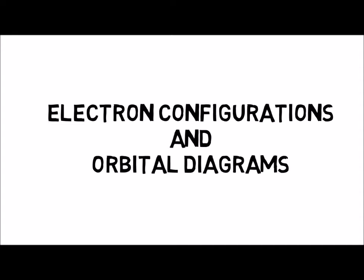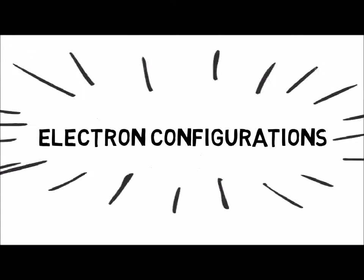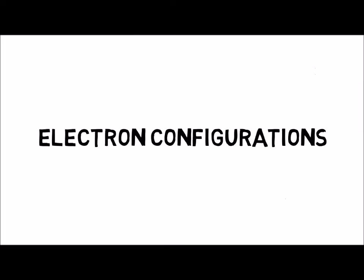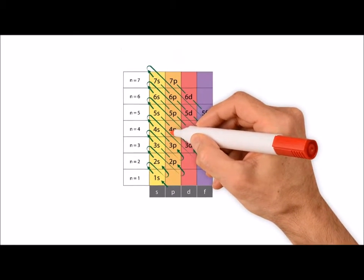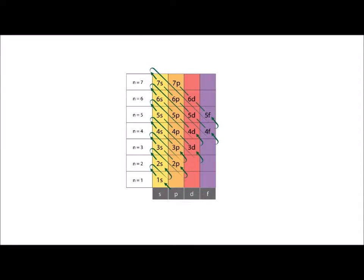This video demonstrates how to write electron configurations and draw orbital diagrams for main group elements. To write an electron configuration, you could memorize the order in which orbitals are filled according to their energy level, but a more convenient method is to use the periodic table.